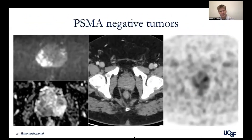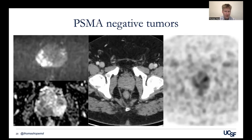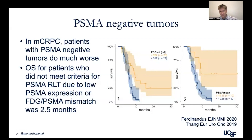I want to talk about PSMA-negative tumors. In the castration-resistant setting, end-stage after chemotherapy, PSMA-negative disease carries a really poor prognosis. In the initial stage, that's a different story — on MRI, restricted diffusion in the prostate may show no uptake on PSMA PET. In the mCRPC setting, patients who had FDG-positive and PSMA-negative disease — an FDG-PSMA mismatch — did very poorly compared to the overall population.